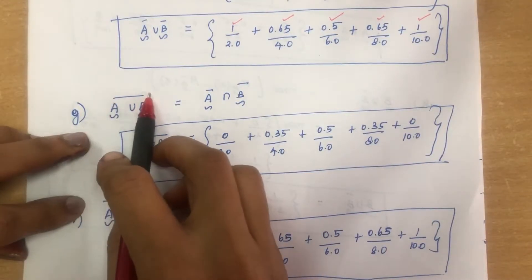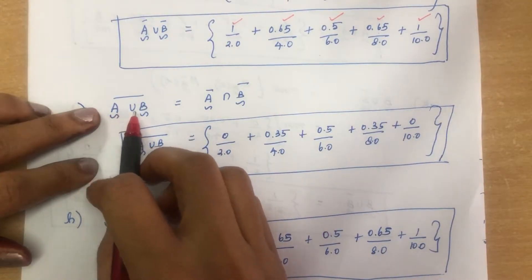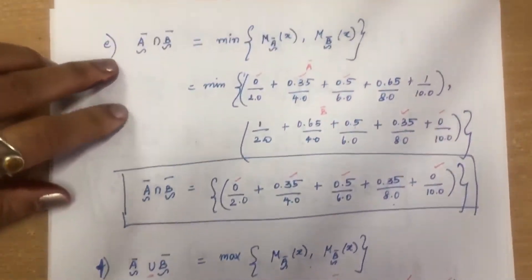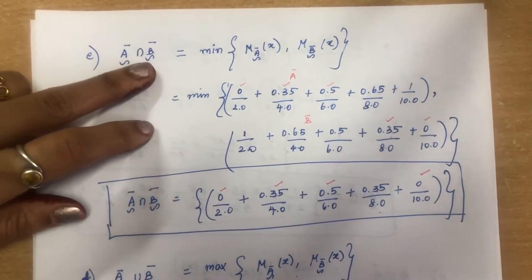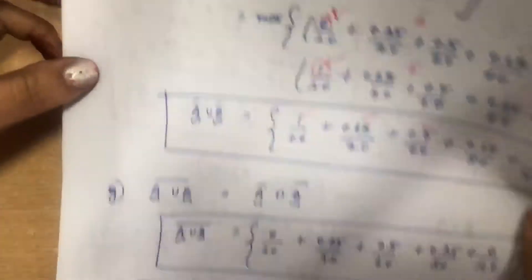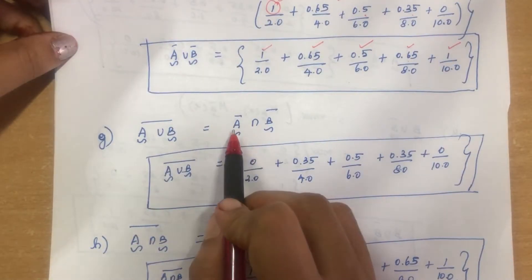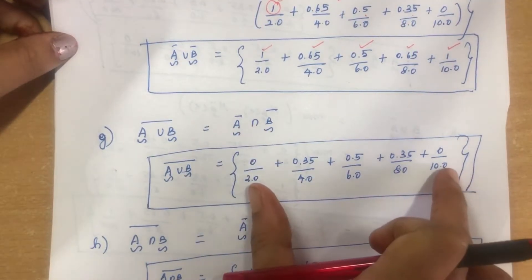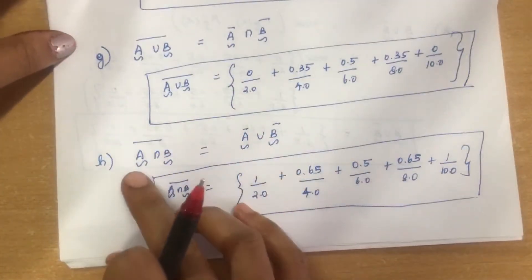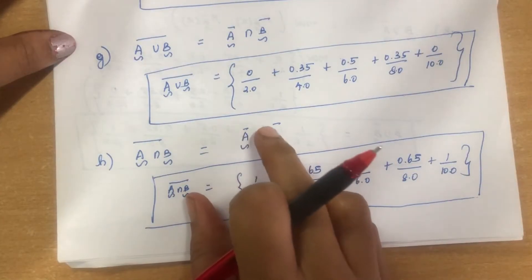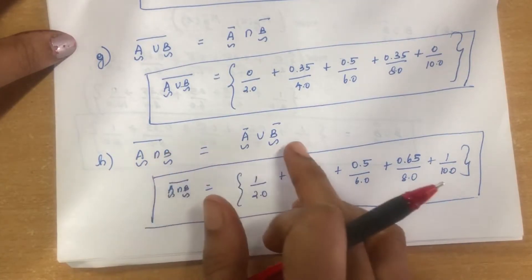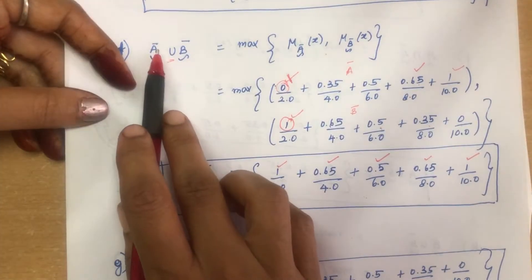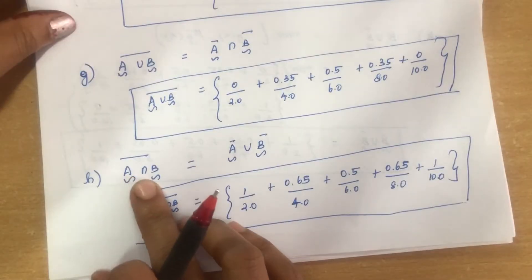By De Morgan's law, A union B whole bar equals A complement intersection B complement — we already found this answer in a previous subdivision. Similarly, A intersection B whole bar equals A complement union B complement, which we also already computed. So the same answers apply for these formulas.